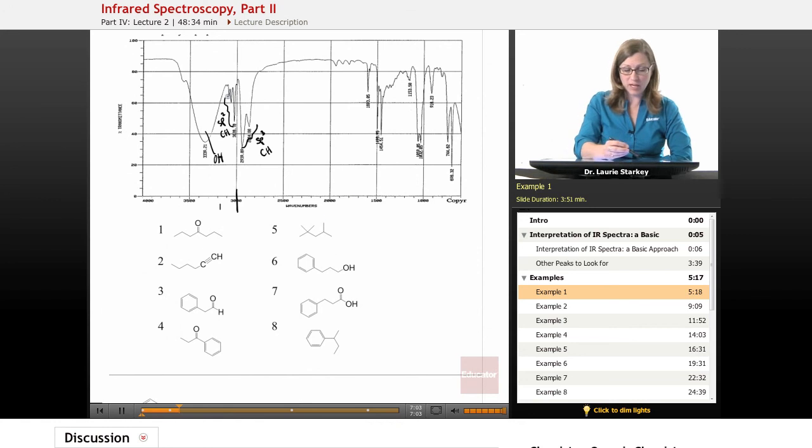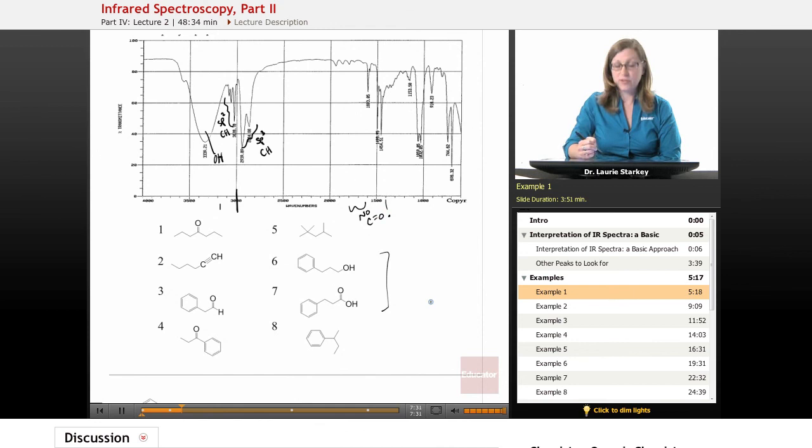Okay, so just based on these functional groups that we know are present, let's take a look at our structures one through eight and decide which spectrum we have, what compound we have. Well we know there's an OH and actually there's only two choices that have OHs. How would we distinguish between six and seven? Well there's two ways. One of them is seven must have a carbonyl and we know we don't have a carbonyl. No carbonyl. It can't be seven so it must be six.